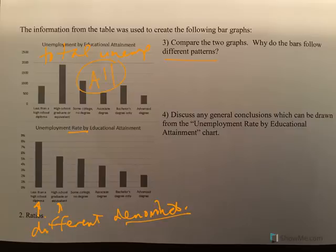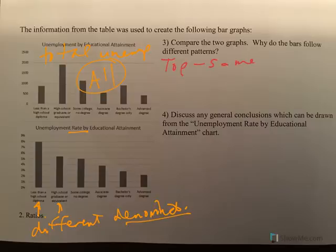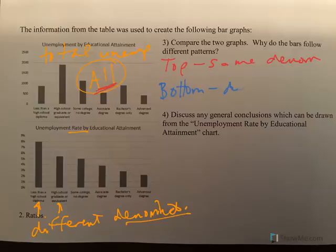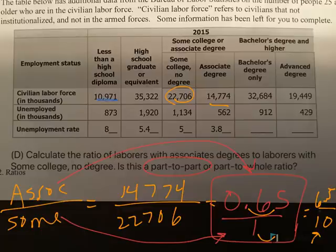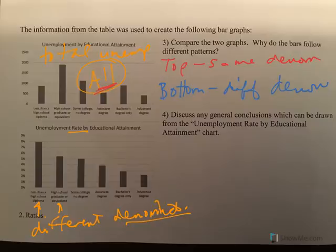The top graph is the number of unemployed out of all the people in the labor force — they have the same denominator because they're based out of everybody. In the bottom graph, each group has its own denominator: this is the denominator for this group, this one for this group, here's the denominator for this group. Since they all have different denominators, your bars are going to be all out of whack.